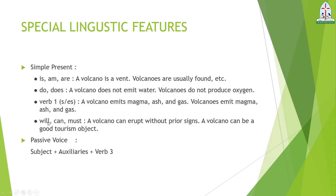For modal usage in simple present, a modal is directly followed by verb one. For example: 'A volcano can erupt without prior signs.' If there is no verb following the modal, we add 'be' first. For example: 'A volcano can be a good tourism object' — 'tourism object' is not a verb, so 'be' is inserted. That covers the first linguistic feature of explanation text.